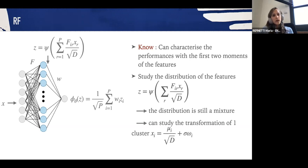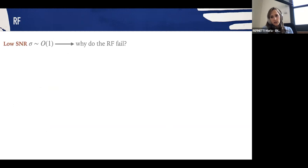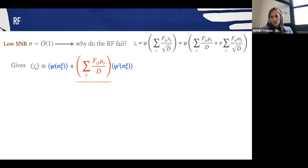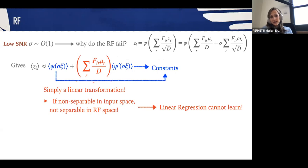Why do random features fail at low SNR? This is the question we want to answer. If we write explicitly the expression of the features, what we see is that the term stemming from the position of the mean actually scales like one over square root of d. This means that if the noise term is of order one, we can expand the activation function around this term. Hence, if we write the expression of the mean of the features, what we see is that given these constants that only depend on the activation function, this transformation is essentially linear. This means that if the mixture is non-separable in input space, it will remain non-separable in feature space, which means that linear regression cannot hope to learn them.